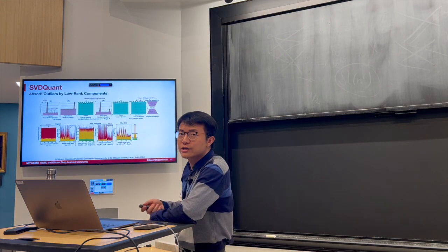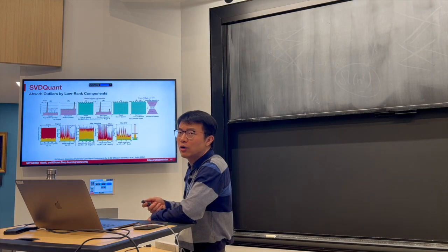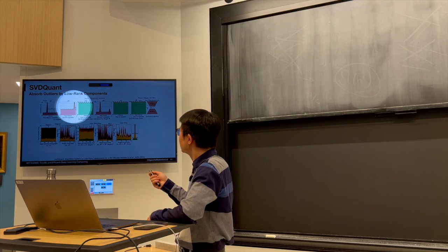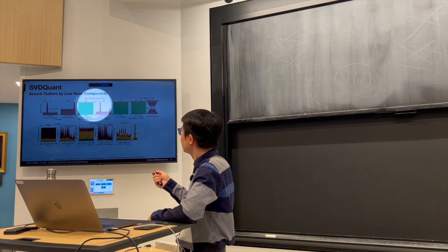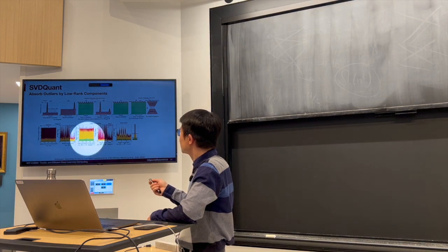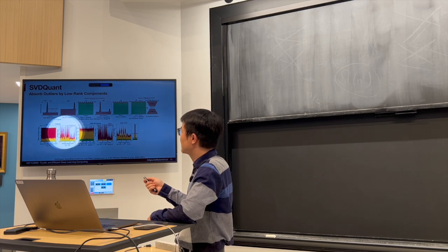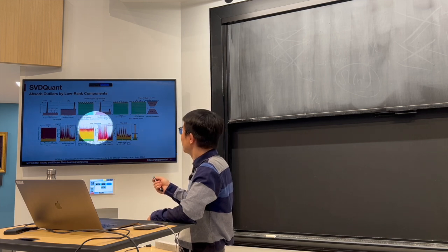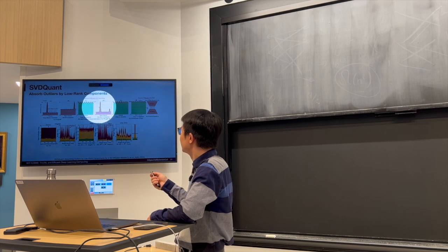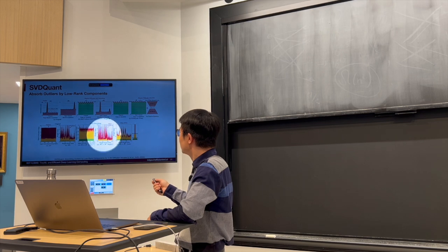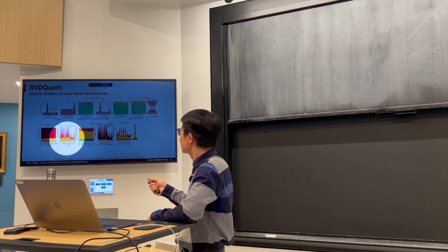So we can apply smoothing like we did in SmoothQuant to migrate the quantization difficulty from the activation to the weight. The activation is much smoother, a lot less red compared right here. But the weight has more outliers. Previously it has only one outlier, now it has two. This is a real distribution, a lot more red compared with the previous one.